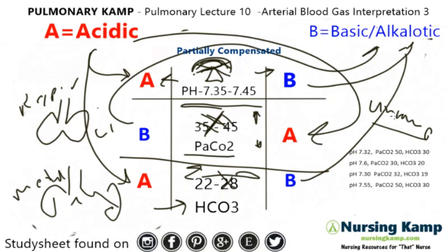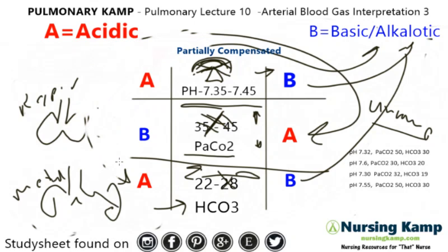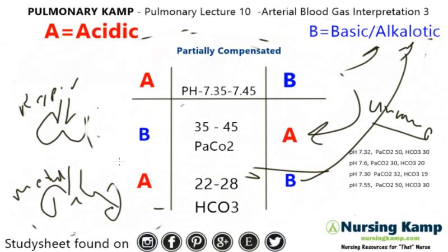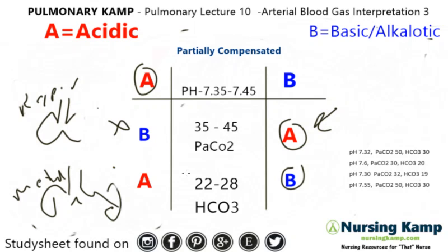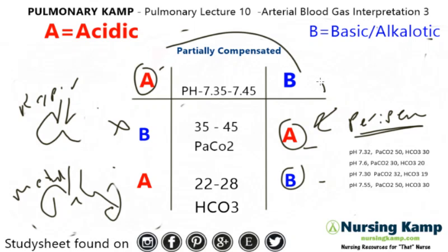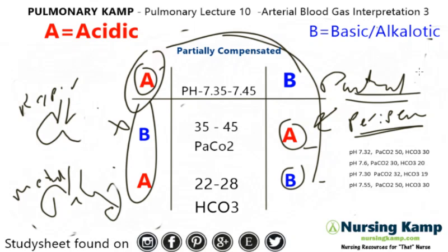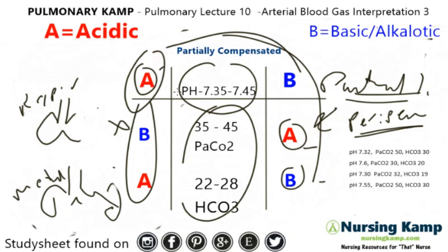Please see my lecture about uncompensated ABGs. What we're going to talk about now is partially compensated. Partially compensated is just like uncompensated, but the body is trying to fix itself — it's just not quite there yet. Partially compensated is whenever you are circling something and everything is on the outside — on the peripheral. If they're all on the peripheral, it's partially compensated. There's nothing in the middle.